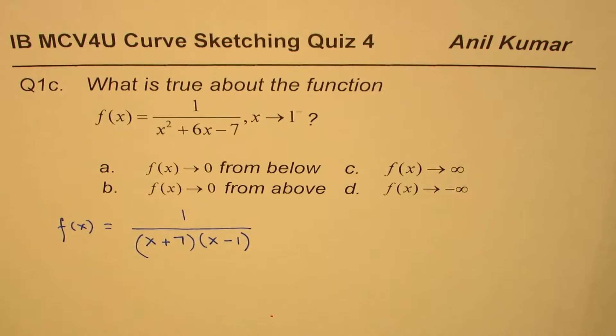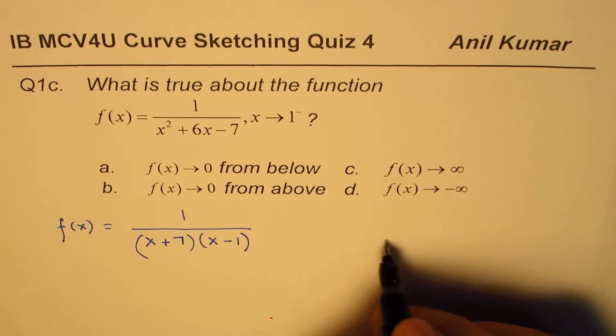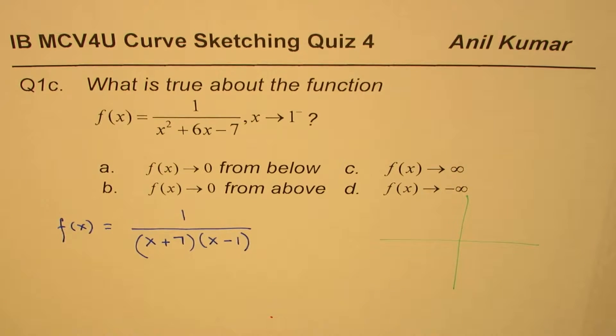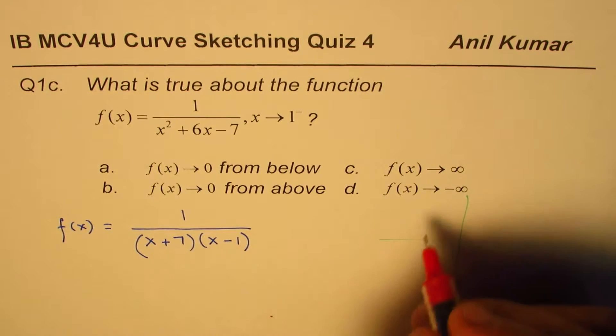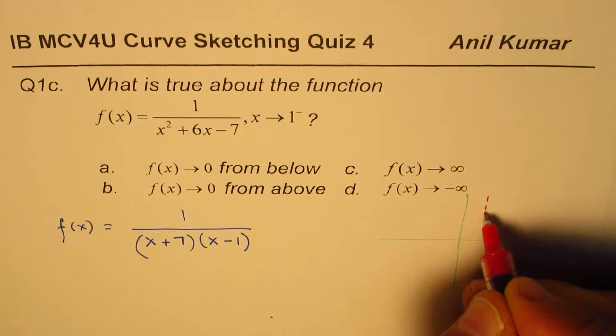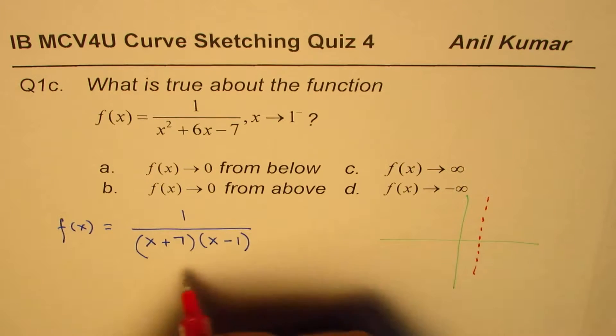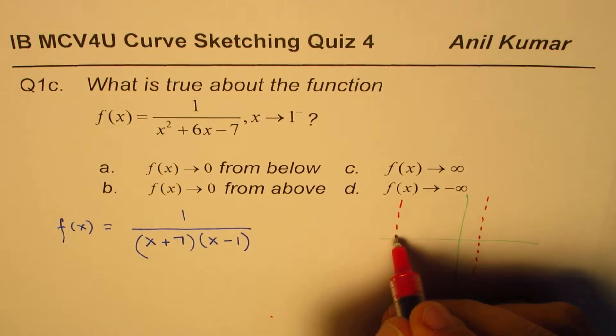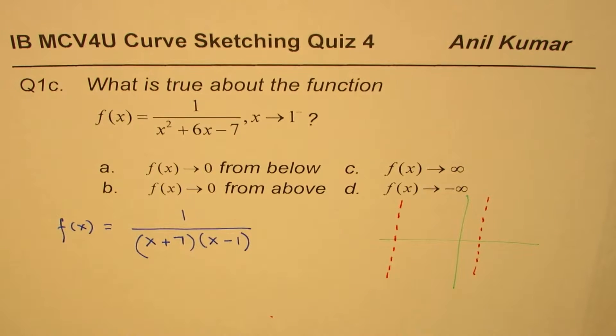Now, clearly, it has two vertical asymptotes, as you can see. One vertical asymptote is at x equals 1 positive. So, this is 1 positive. The other one is at -7. So, these are the two vertical asymptotes.